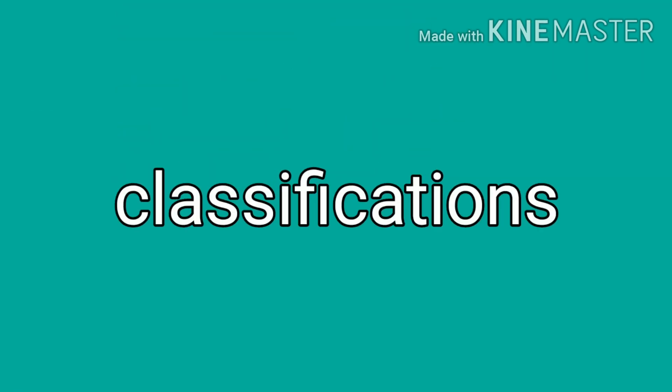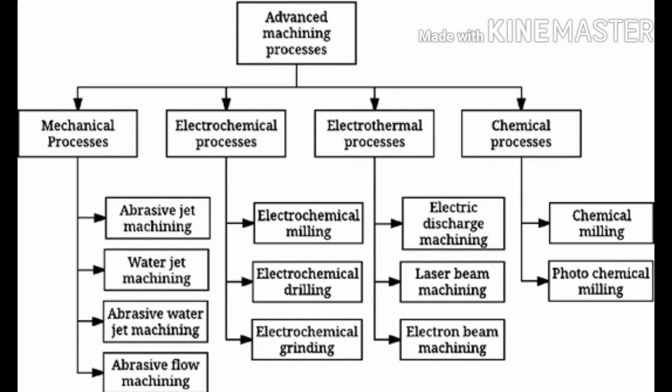Now let's see the classifications of non-traditional machining processes. Generally, non-traditional machining processes are classified based on the type of energy used in the machining process — such as mechanical energy, thermal energy, electrical energy, chemical energy, or a combination of these energies.